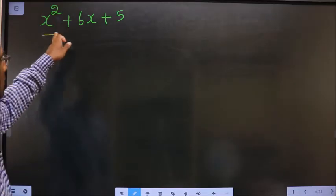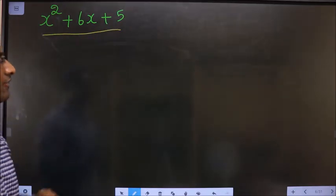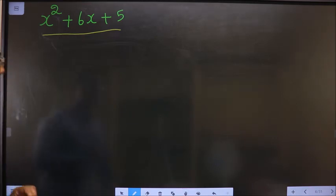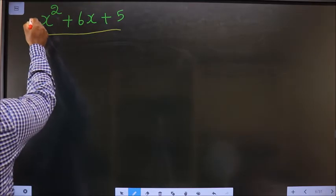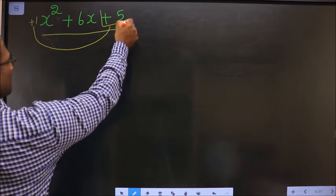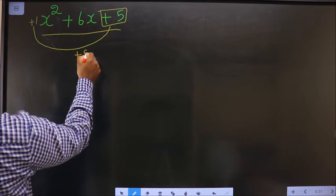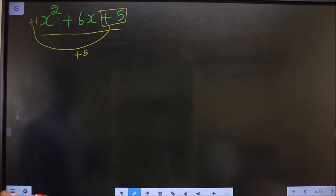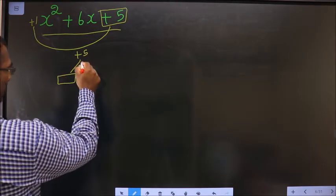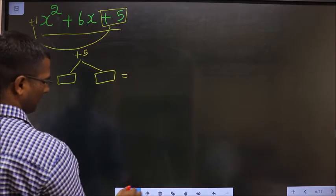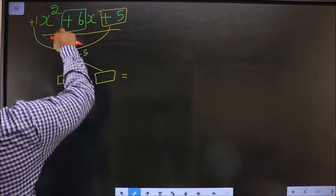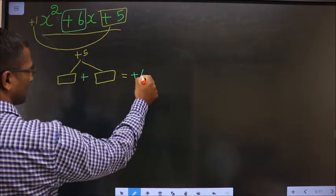Factorize x squared plus 6x plus 5. How do we factorize it? Step 1: whatever number you have here should be multiplied to the constant, that is plus 5 in this case. Next, you should look out for two numbers such that when you add these two numbers you should get this middle number, plus 6.